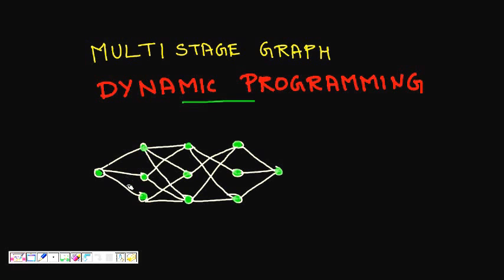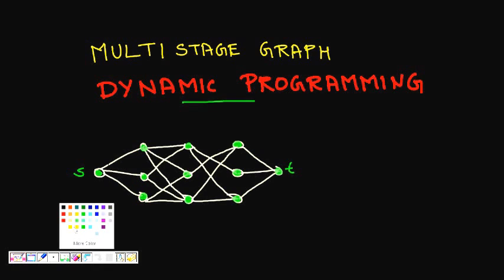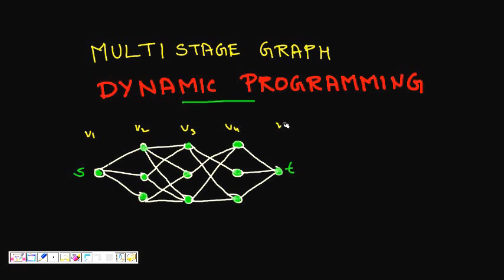So what is a multi-stage graph? A multi-stage graph has nodes which form distinct groups or stages. Here we have stages V1, V2, V3, V4, and V5, where the source is in the first stage and the sink is in the last stage. In the first and last stage, there is only one node.